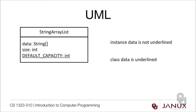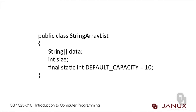Here's what our UML looks like: StringArrayList is the class name, with instance data fields 'data' (a string array) and 'size' (an integer) — not underlined because they're instance data. Then 'defaultCapacity' of type int is underlined because it's class data. In code: public class StringArrayList has a String array called 'data', int 'size', and 'final static int DEFAULT_CAPACITY = 10'. Ten is what I picked up from the ArrayList class. What's important is that it be static so all objects share just one field, and final so nobody can change it inside the class.